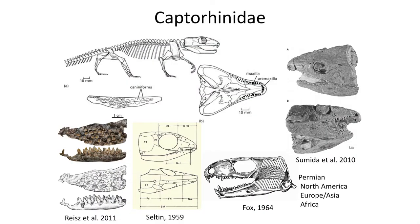The next group of anapsid reptiles are the closely related Captorhinidae family, a group of primarily Permian reptiles that arose during the latest Pennsylvanian but quickly diversified to become widespread with a nearly global distribution during the Permian. The first Captorhinids were found in Texas, but specimens have been found in China, Africa, and across Europe as well.